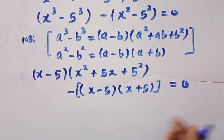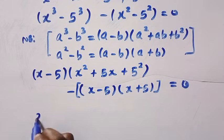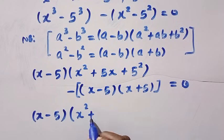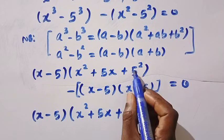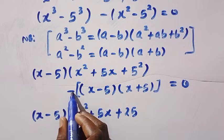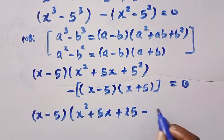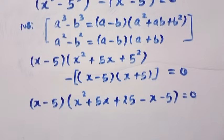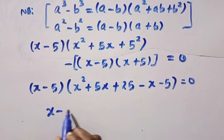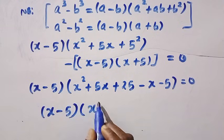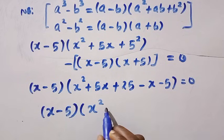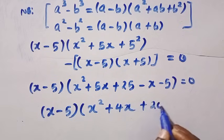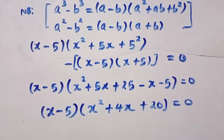Looking at both terms, we see x minus 5 is common. Factoring it out, we are left with: x minus 5, times open bracket x squared plus 5x plus 25, minus x plus 5, close bracket, equals 0. Simplifying inside: 5x minus x is 4x, and 25 minus 5 is 20. So we have x minus 5, times x squared plus 4x plus 20, equals 0.